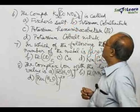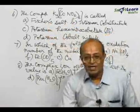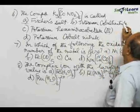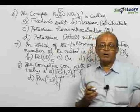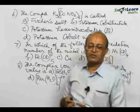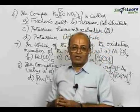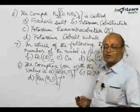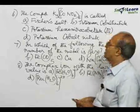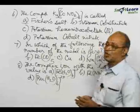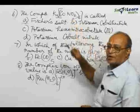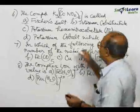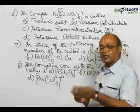B: Potassium cobaltnitrite. Complex compounds are given common names. For example, K4Fe(CN)6 is Potassium ferrocyanide, K3Fe(CN)6 is Potassium ferricyanide. Potassium cobaltnitrite is a common name for this particular complex, instead of using IUPAC nomenclature. It is also correct.